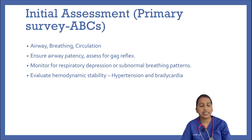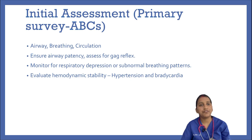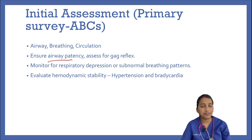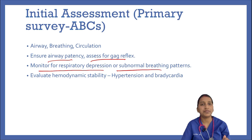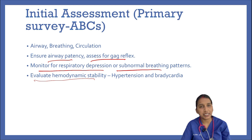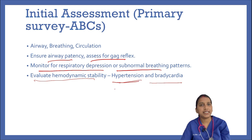Coming to evaluation. The initial assessment begins with the primary survey — ABCs — looking for airway, breathing, and circulation. We have to ensure the airway is patent and assess for gag reflex. We must monitor for respiratory depression or subnormal breathing patterns and evaluate hemodynamic stability, looking for hypertension and bradycardia.